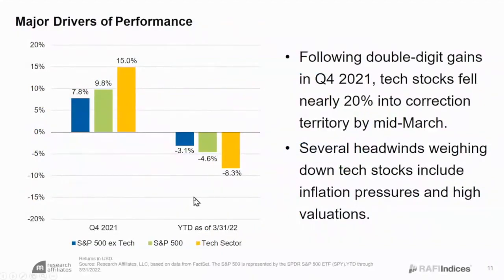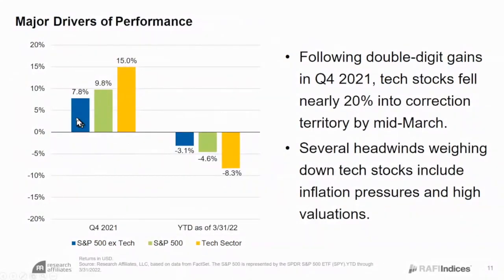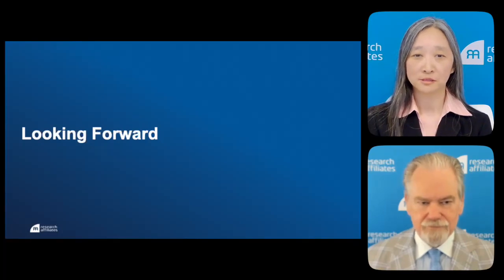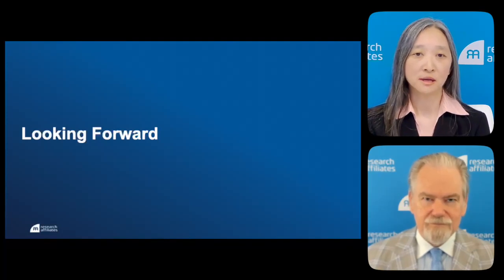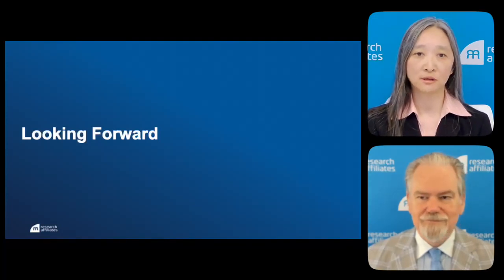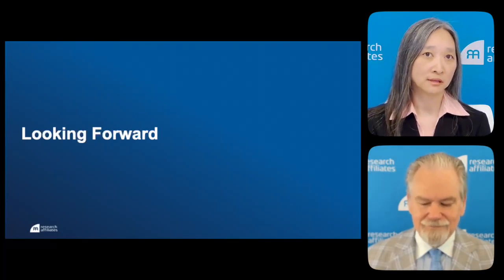The drivers of performance are fairly straightforward. Looking at Q4 2021 and Q1 2022: S&P up 10% then down 5%; tech up 15% then down 8%; S&P excluding tech up 8% then down 3%. Last shall be first, first shall be last — we often see that kind of rotation in markets. We know RAFI has navigated recent market shifts pretty well. Turning from past to future, how does RAFI need to perform to achieve its 2% long-term excess return, and how likely is that?